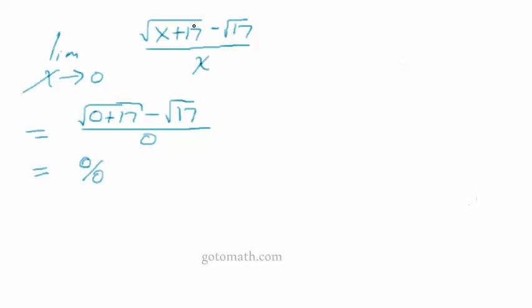Now in previous problems we would factor and cancel out like factors. Well, there's a different technique that we'll be using in this particular problem. It's called multiplying by the conjugate and that's what we're going to be doing. So let me just draw a line divider here and do this problem right over here. So we have the limit as x approaches 0 of the square root of x plus 17 minus the square root of 17 over x.